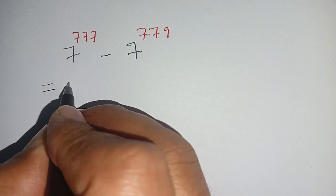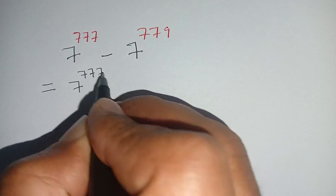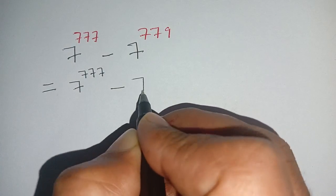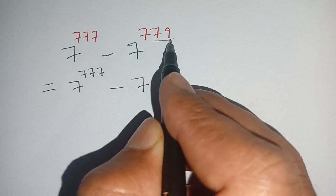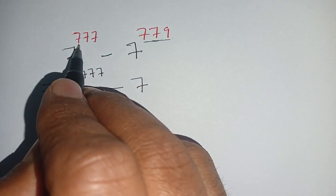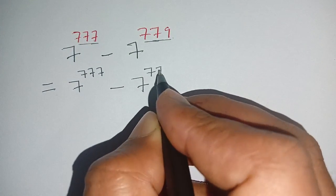We can write this as 7^777 minus 7^779. This 779 can be broken down in terms of 777.